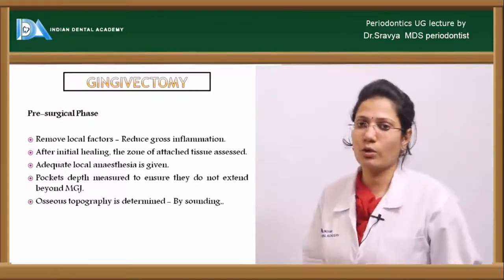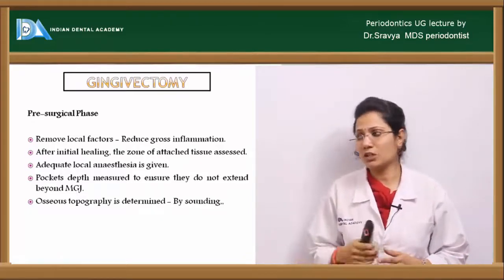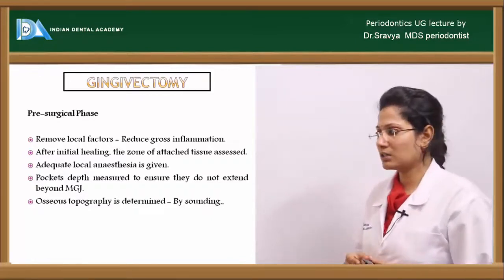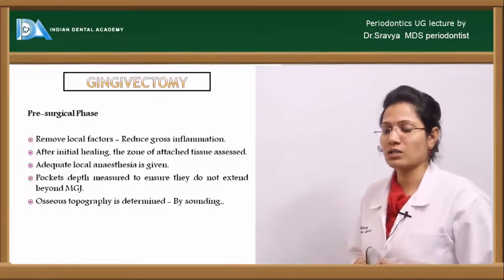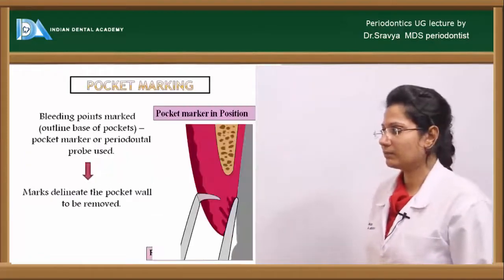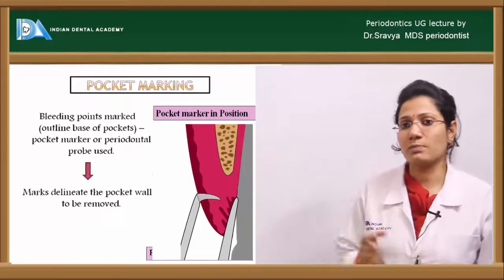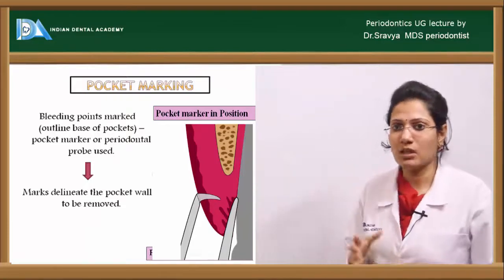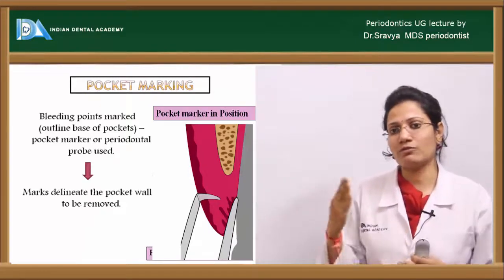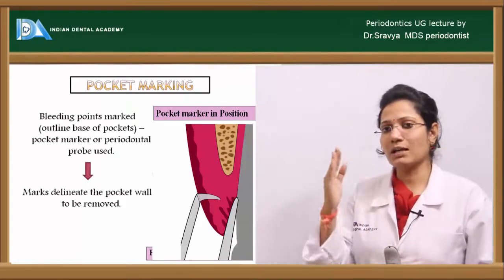For the gingivectomy procedure, in the pre-surgical phase, first remove all local factors, control inflammation, and after initial healing measure the zone of keratinized gingiva. After adequate local anesthesia, measure the pockets and ensure they are not beyond the mucogingival junction. Determine osseous topography by bone sounding, then perform pocket marking using the Crane-Kaplan pocket marker — a left and right pair of instruments used to mark bleeding points outlining the base of the pocket.